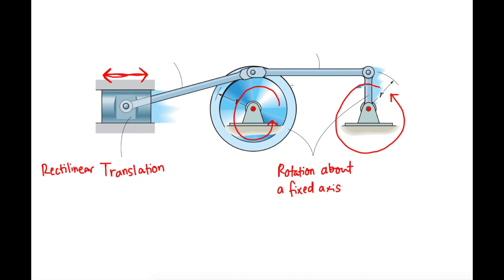What about this arm here? Since the length of the circular path this rigid body makes during its motion equals the radius R here, and the radius of this disc is also R — they are the same. Therefore, the motion of this arm will also be a translational motion, but this is a curvilinear translation, where the path of motion is a circular path.